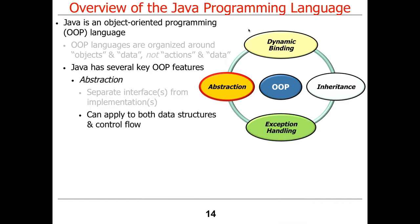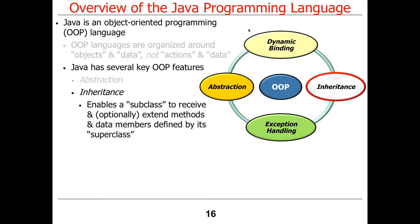The kinds of abstractions that Java provides can apply to both data and control. Examples of abstraction in Java include classes, iteration mechanisms, loops, iterators, and various things like the forEach function in Java 8. Those are all examples of abstractions.